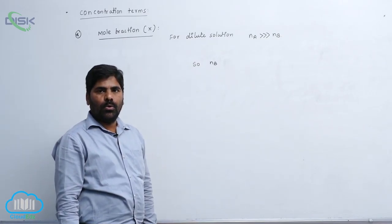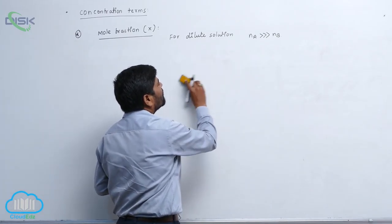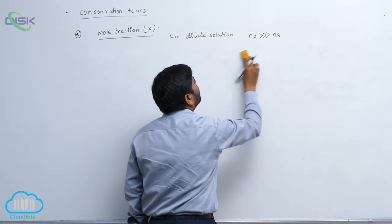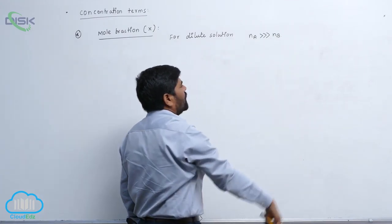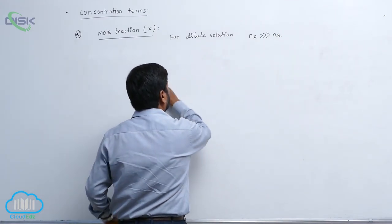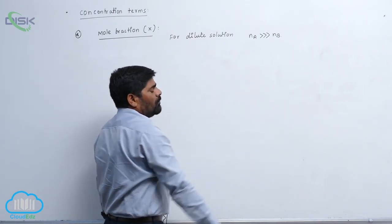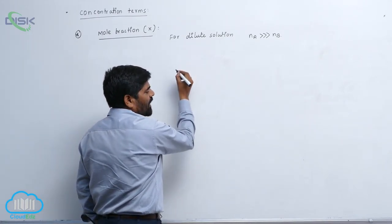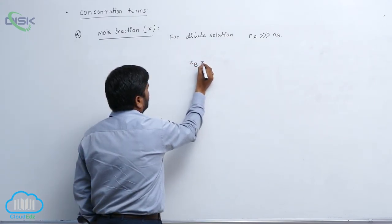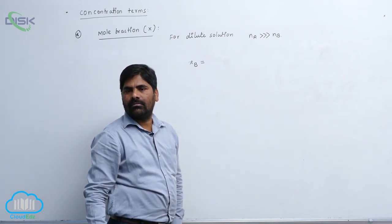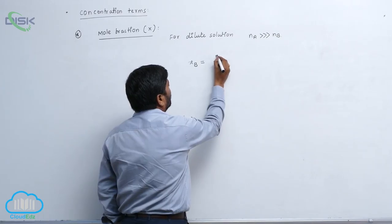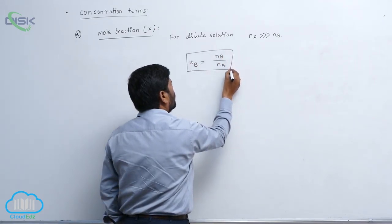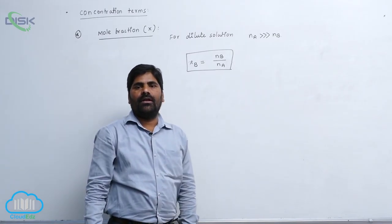For very dilute solutions, the solvent is very much more compared to NB, so therefore mole fraction XB equals to NB by NA.